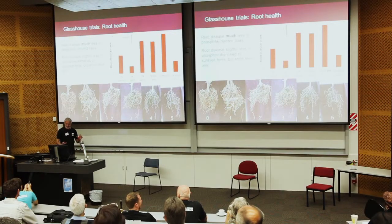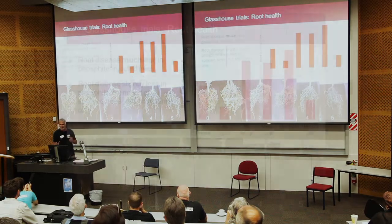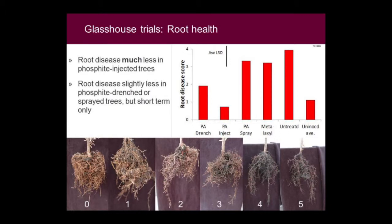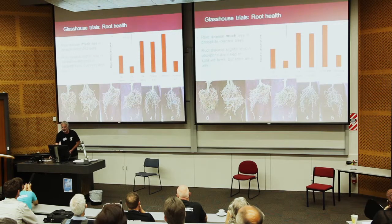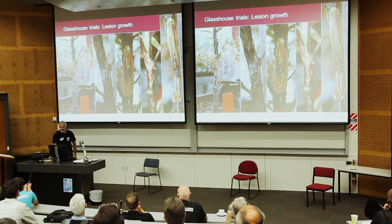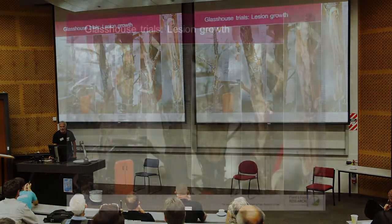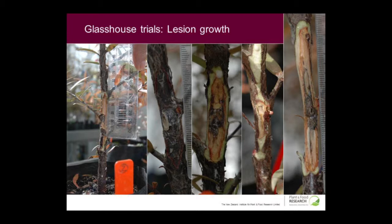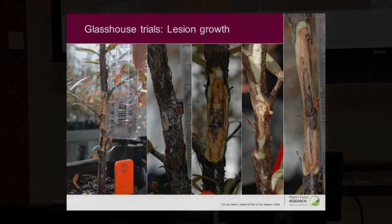In terms of what we measured — things like root disease — you can see across the bottom there a whole range of different root health outcomes by the end of the experiment. The bottom line was that root disease was much less in the trees treated with phosphite than in the trees left untreated. For trees inoculated onto the trunk, we looked at lesion spread. You can see the sorts of lesions here — the inoculation point was here — and you can see how the PTA has spread up and down from that point, and a whole range of different outcomes.